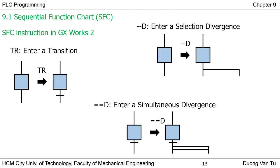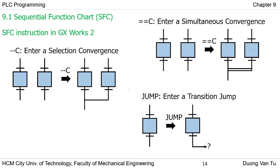Now we look at some instructions when preparing a control program using SFC in the GX Work tool. For the transition we type T followed by a number; for the selection divergence we type dot-C-dot-6-D; and for the simultaneous divergence we type equals-equals-D. We can also use a jump instruction to return to a previous step, which is very useful when preparing the SFC control program.